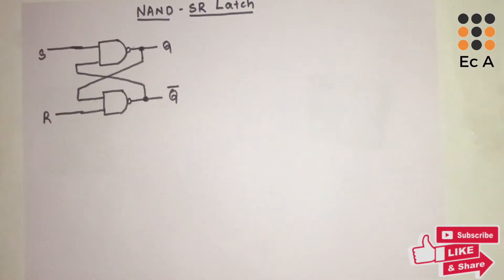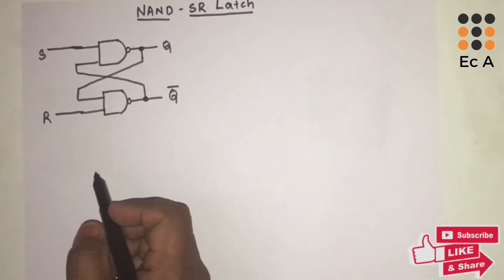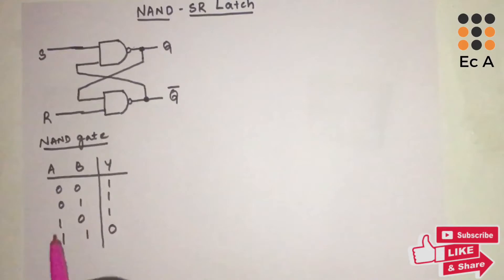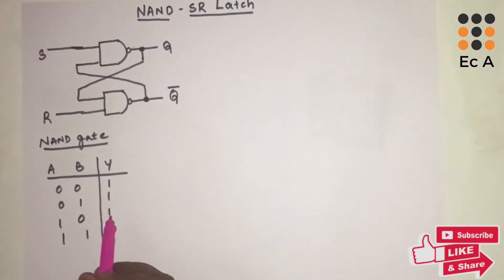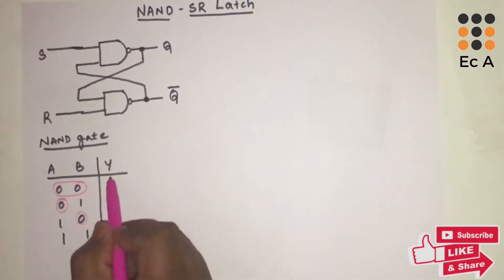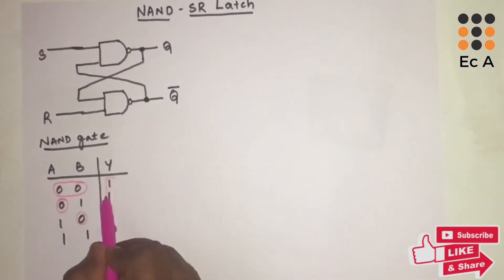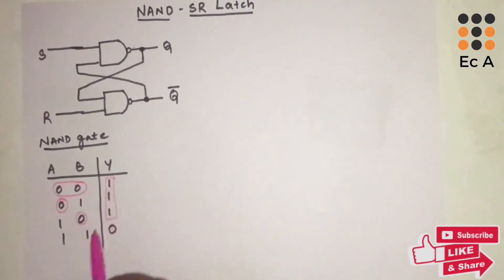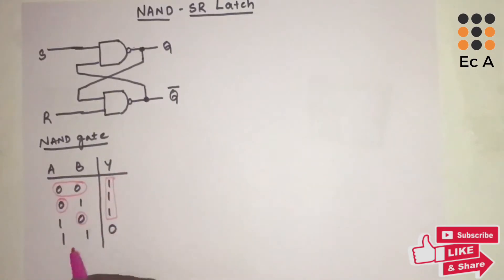Before understanding the operation of the NAND SR latch, let us first understand the truth table of the NAND gate. From the truth table we identify that if any one of the inputs is 0, the output is 1. If both inputs are 1, the output is 0. Using this logic we will understand the operation of the NAND SR latch.